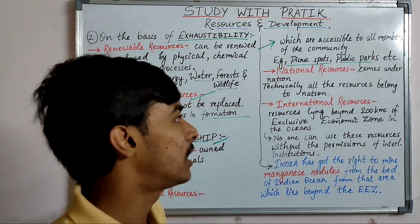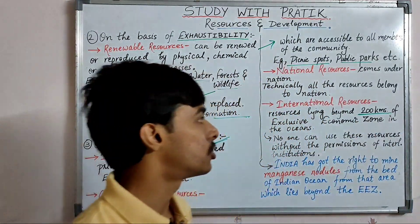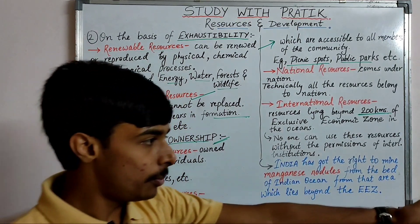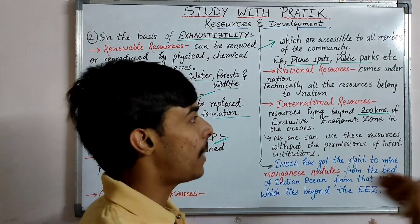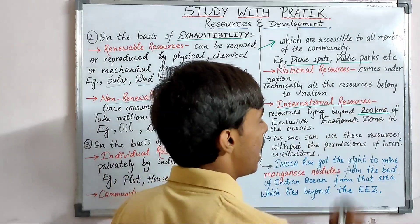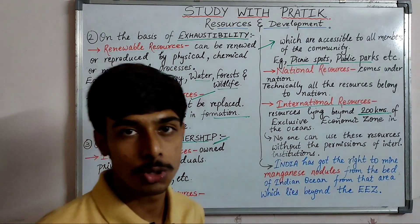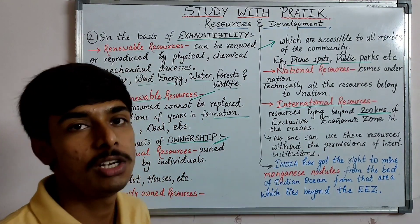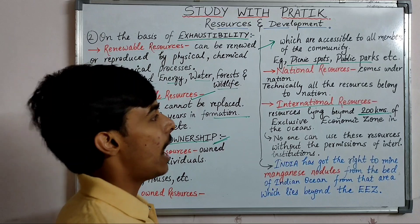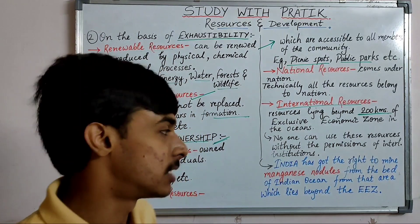International resources are resources lying beyond 200 km of the exclusive economic zone in the oceans. In the ocean, up to 200 km is a nation's area; beyond that, all resources and area come under international resources. No one can use these resources without the permission of international institutions.